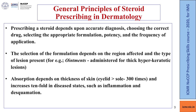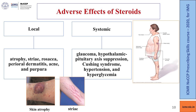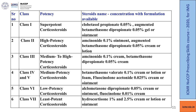Absorption increases tenfold in disease states such as inflammation and desquamation. Steroids cause local adverse effects including skin atrophy, striae, rosacea, perioral dermatitis, acne, and purpura. Systemic adverse effects — seen after continuous use for more than six months — include glaucoma, hypothalamic-pituitary axis suppression, Cushing syndrome, hypertension, and hyperglycemia. Steroids are classified into seven classes according to potency, from least potent to super potent; details are in the reference material.